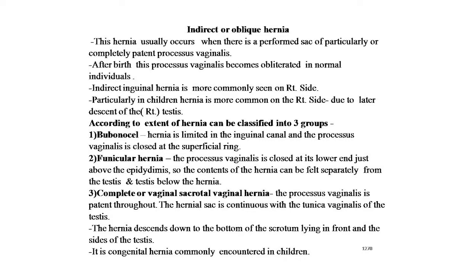Indirect inguinal hernia is more commonly seen on the right side, particularly in children. Hernia is more common on the right side due to the later descent of the right testis. According to the extent of the hernia, it can be classified into three groups. First is bubonocele hernia, limited in the inguinal canal, with the processus vaginalis closed at the superficial ring. Second is funicular hernia, where the processus vaginalis is closed at its lower end just above the epididymis, so the content can be felt separately from the testis. Third is the complete or vaginal hernia, where the processus vaginalis is patent throughout; the hernia sac is continuous with the tunica vaginalis of the testis and descends to the bottom of the scrotum. It is a congenital hernia commonly encountered in children.